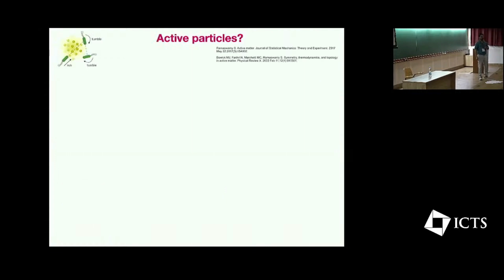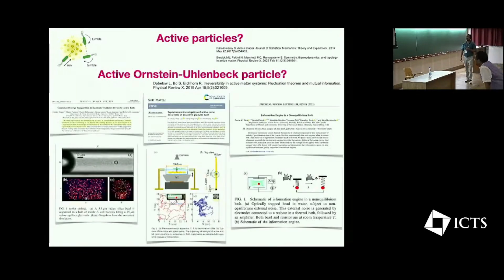So we all are familiar with what are active particles. Active particles are generally those particles which gain energy from the environment and perform directed motion, and at random intervals of time they actually switch their direction. There are different types of models which model these active particles. I am particularly interested in this active Ornstein-Uhlenbeck particle, and I just want to emphasize that this particle can also be realized in experiment.